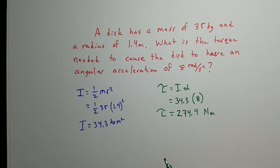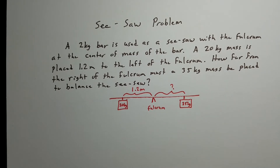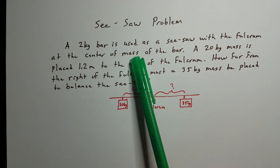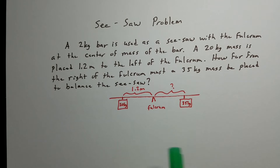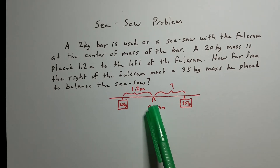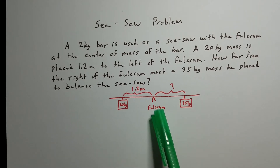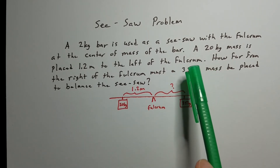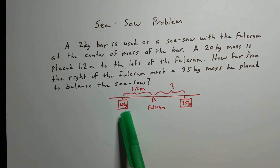A lot of times we have a system that we want to keep in balance — in engineering we call those static-type questions, where we want everything to stay still. Let's look at one of the most famous problems: the seesaw problem. We've got a 2-kilogram bar being used as a seesaw. We've got a fulcrum — that little triangle-like thing — and we measure all distances from that fulcrum.